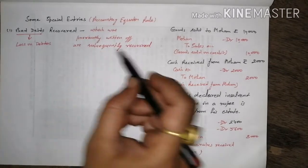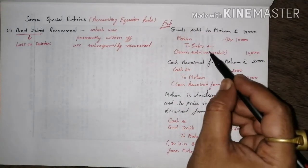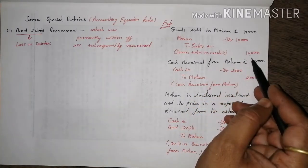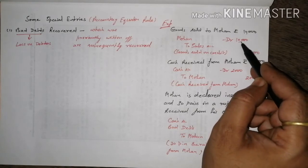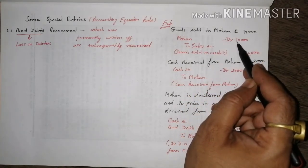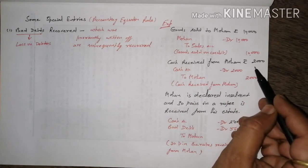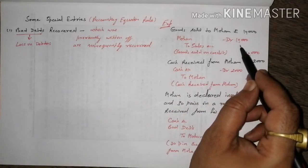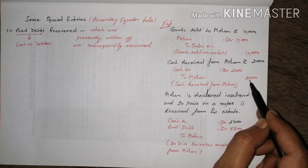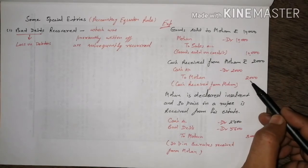Example: Goods sold to Mohan, Rs. 10,000 — Mohan account debited, sales account credited. Then cash received from Mohan Rs. 2,000 — cash account debited, Mohan account credited Rs. 2,000. Debit value Rs. 10,000 minus credit Rs. 2,000 leaves a debit balance of Rs. 8,000 in Mohan's account.